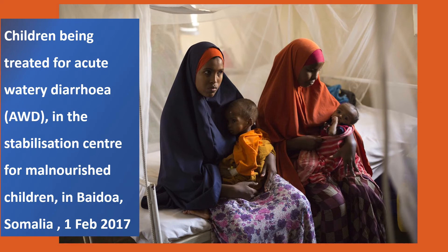Here we can see malnourished children who were also having acute watery diarrhea. They came to the stabilization center for malnourished children in Baiduwa in Somalia. If we take a snapshot or a cross-section, we would be able to measure the prevalence of diarrhea among children with malnutrition using a cross-sectional study design.